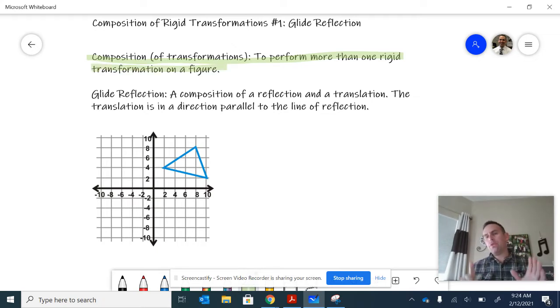For example, you might translate and then rotate, or reflect and then rotate and translate. One of the most popular compositions is called a glide reflection, which is defined as a composition of a reflection and translation.